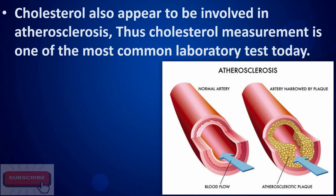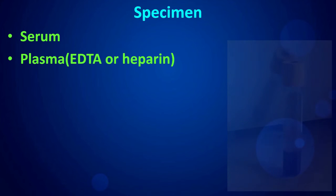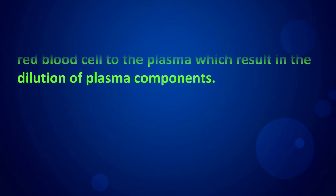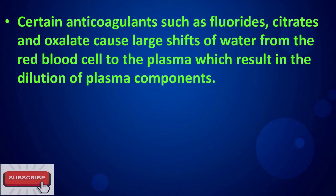The specimen used is serum or plasma with EDTA or heparin anticoagulants. Certain anticoagulants such as fluorides, citrates, and oxalate cause large shifts of water from the red blood cells to the plasma, which results in the dilution of plasma components.